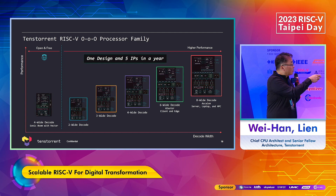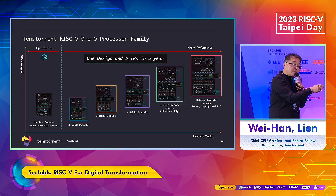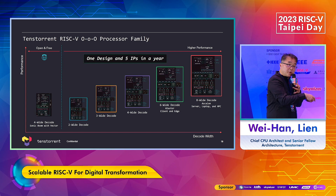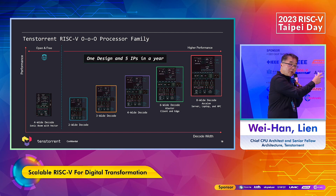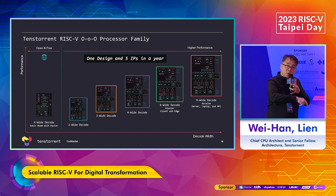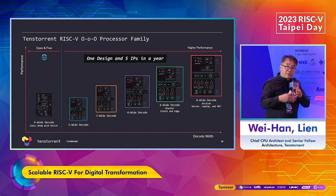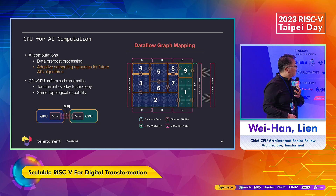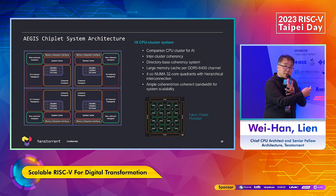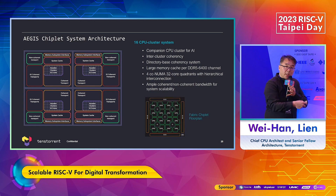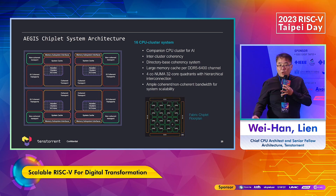Our high-performance CPU, shown on the right, is an 8-decode machine designed to compete with the AMD Zen 5 — a really high-performance server-grade processor. We also make sure this design can be parameterized to support 6-decode, 4-decode, and 3-decode machine configurations. Through this approach, we have a scalable RISC-V roadmap that pairs with our AI processor for different levels of PPA application. We're building a CPU chiplet where each chiplet is a 32-core high-performance CPU system.